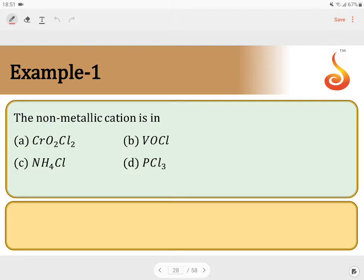For that we need to know the dissociation. If we take CrO2Cl2, this is nothing but chromyl chloride. Chromyl chloride is a covalent compound, therefore no dissociation for this.